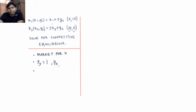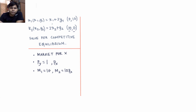Given py equals 1 and px, we can find the income levels of individuals 1 and 2. Income of individual 1 is 0 times px plus 10 times py, which equals 10. Income of individual 2 is 10 times px plus 0 times py, which equals 10px. The slope of the budget line for both individuals is px divided by py, so in this case it is px.